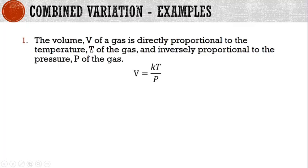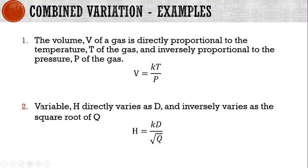For combined variation example one, the volume v of a gas is directly proportional to the temperature t and inversely proportional to the pressure p, so v equals kt divided by p. In example two, variable h directly varies as d and inversely varies as the square root of q, so h equals kd divided by the square root of q.